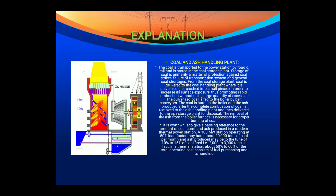Here you can see the diagram of a boiler furnace and boiler. Steam is fed to the turbine and then to the alternator, where electrical power is generated. It is stepped up by the transformer and supplied to the bus bar for transmission.